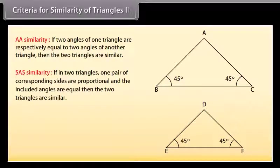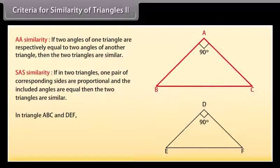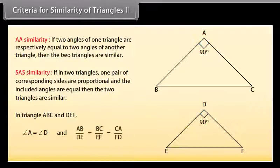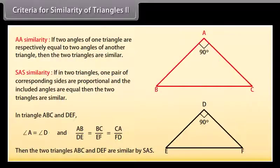SAS similarity: if in two triangles one pair of corresponding sides are proportional and the included angles are equal, then the two triangles are similar. In triangle ABC and DEF, angle A equals angle D and AB upon DE equals BC upon EF equals CA upon FD, then the two triangles ABC and DEF are similar by SAS.